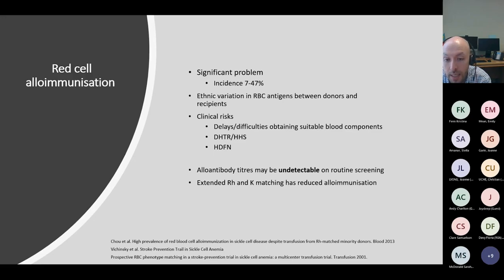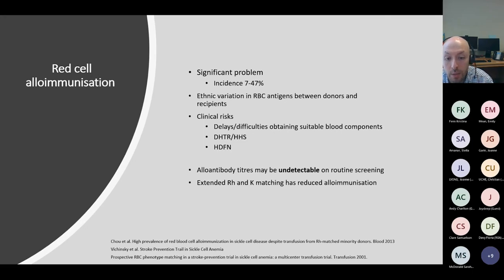Some individuals develop Rh antibodies despite receiving apparently Rh-matched blood, which is why genotyping can be useful to provide more accurate antigen profiles for both donors and recipients. Once patients become alloimmunized, it becomes more difficult to find suitable blood and more likely that hemolytic transfusion reactions will occur. Alloantibodies can be transient, so when a patient has no detectable antibody on routine screen, it doesn't necessarily mean they don't have a historic antibody that could still cause a hemolytic transfusion reaction.